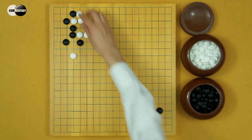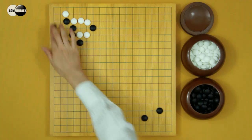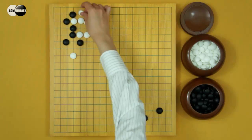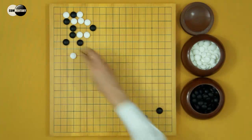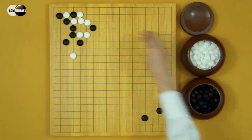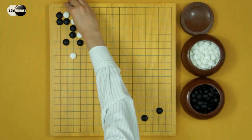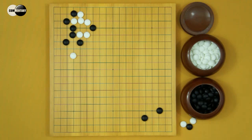That is because in this situation, if White hane, Black can't hane. But after this exchange, if White atari, Black's atari will be sente. So this result is good for Black. White can't play like this.